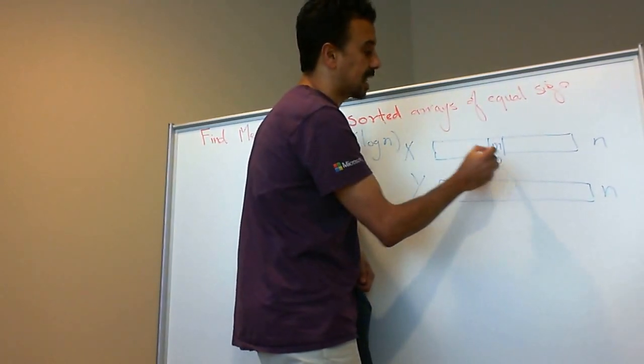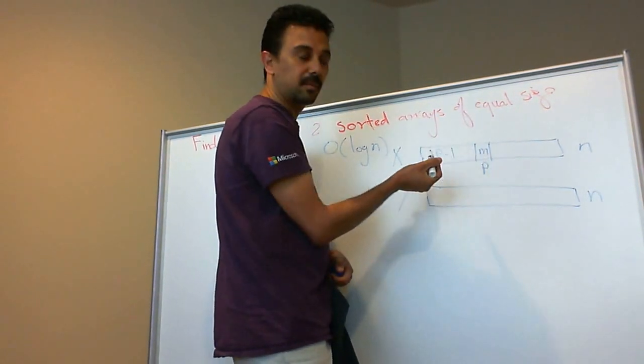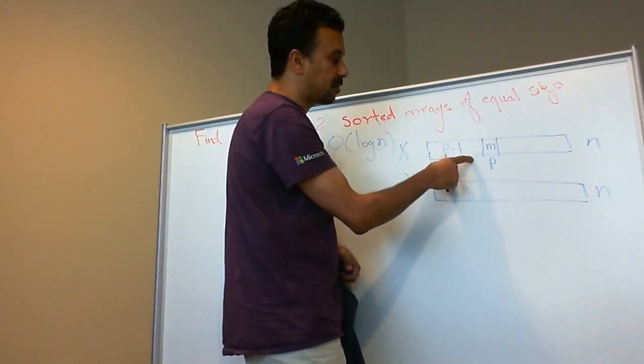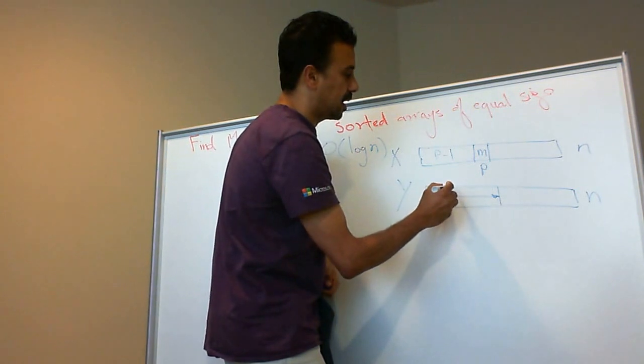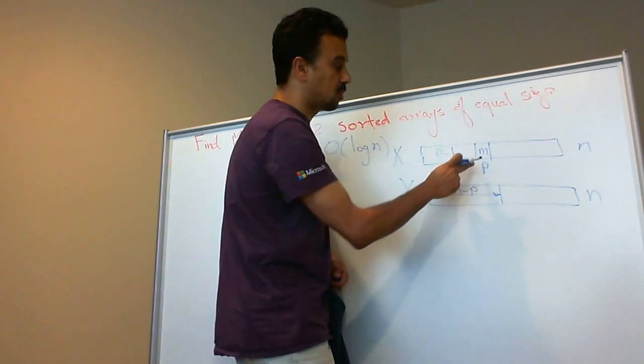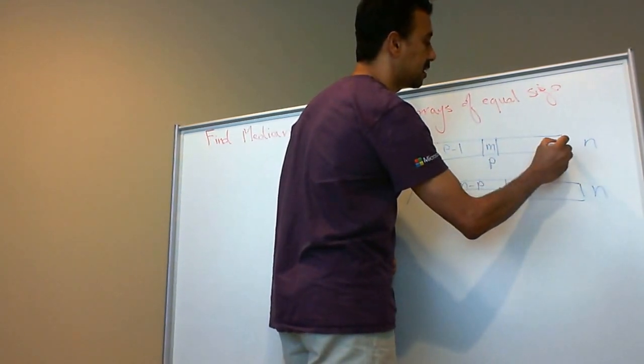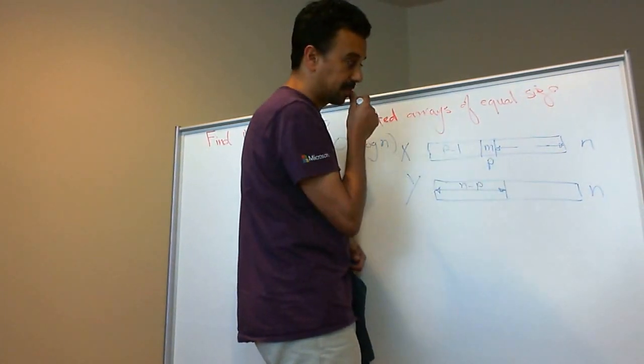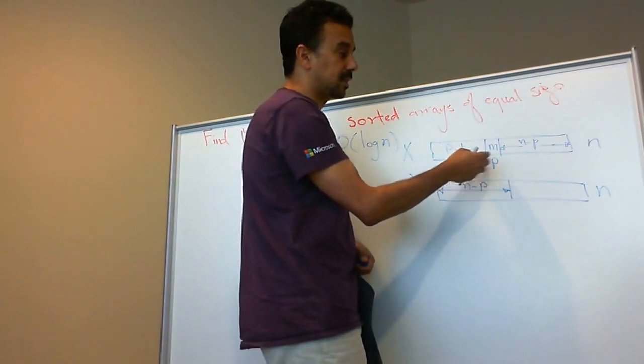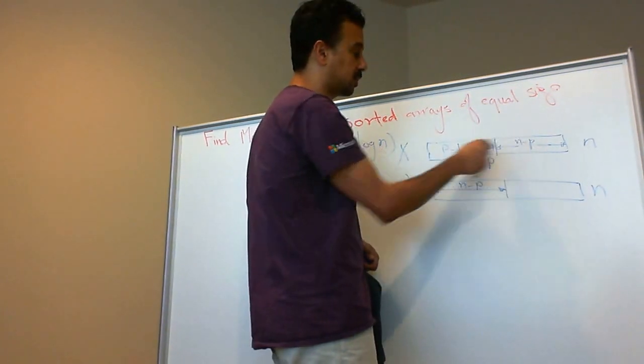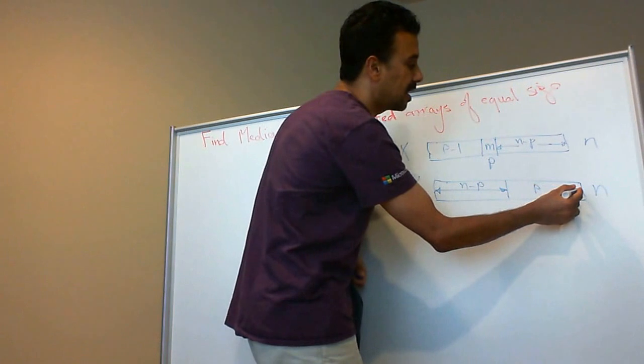The distance from here to here is p minus 1. So I have p minus 1 elements on the left of m. The rest of the smaller elements would be in y, which would be n minus p elements. Those n minus p elements should be smaller than m. How about those greater than m? From here to here are n minus p elements in x. But I need n of them, so the rest, which is p elements, must be in y.